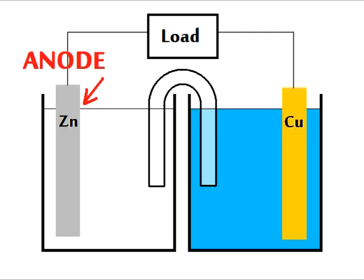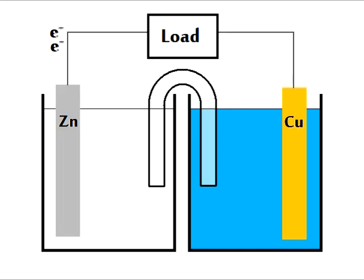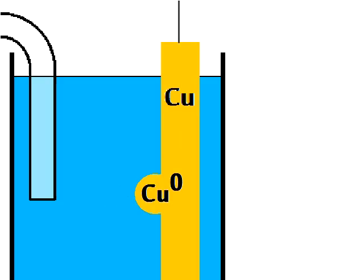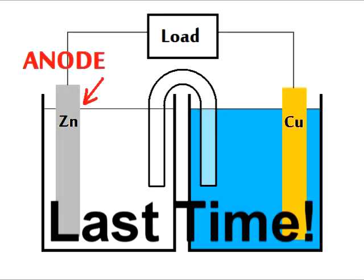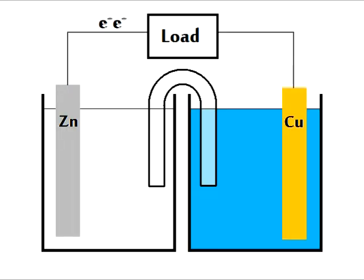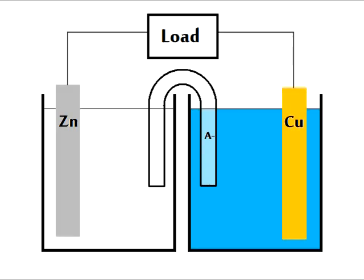We start at the anode, electrons are lost there, and go through the wire and through the load on fire. They enter the cathode and reduce the cations, and the anions go through the salt bridge back to where?